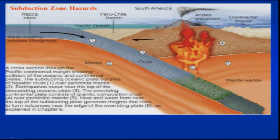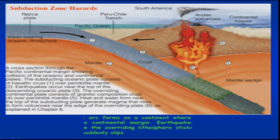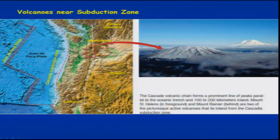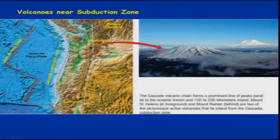These subduction zones are extremely dangerous if they are close to our subcontinent. India has two types of subduction zones: on the eastern side the Sumatra-Andaman subduction zone, and on the western side the Makran subduction zone. So we have been trapped from both sides.